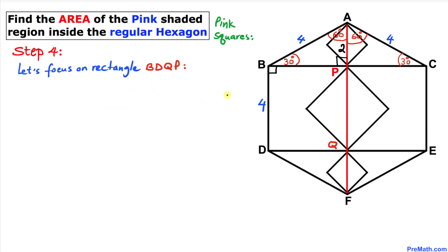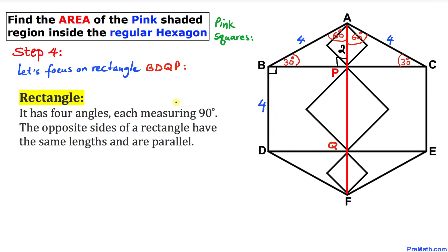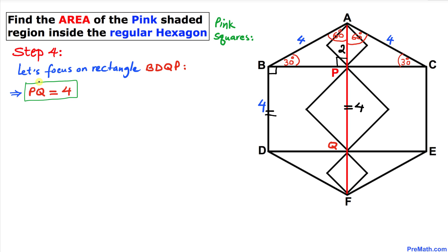Now let's focus on rectangle BDQP. A rectangle has four angles each measuring 90 degrees, and opposite sides have the same lengths and are parallel. So side BD equals opposite side PQ. Since BD is 4, PQ is going to be 4 as well — so PQ equals 4 units.